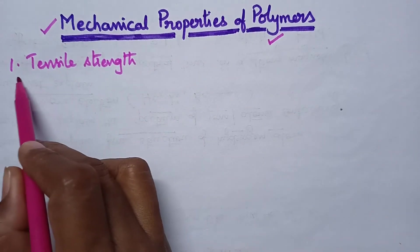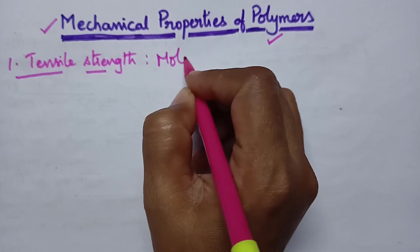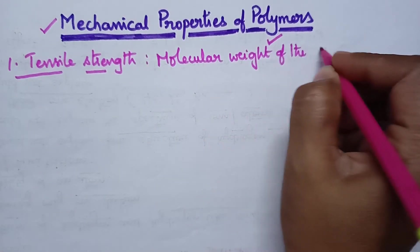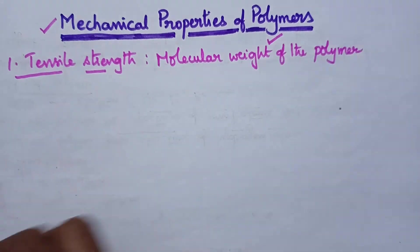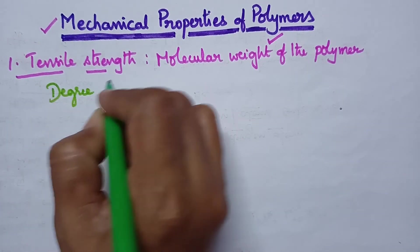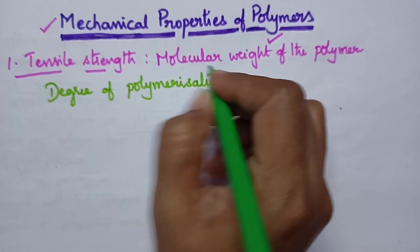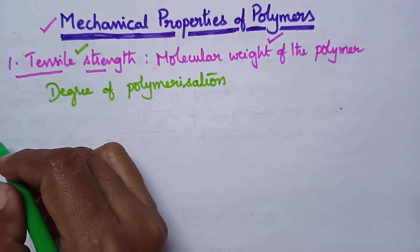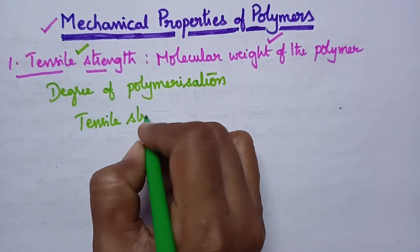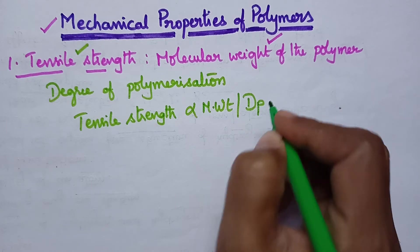Moving to tensile strength first — tensile strength is directly proportional to the molecular weight of the polymer. In other words, the molecular weight of the polymer depends upon the degree of polymerization. Tensile strength means the load bearing capacity of the polymer.